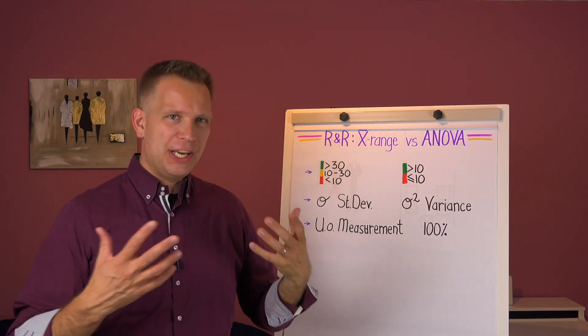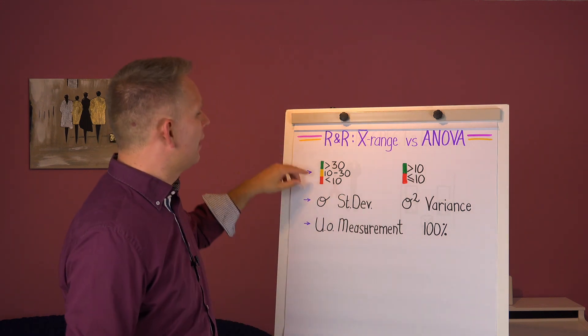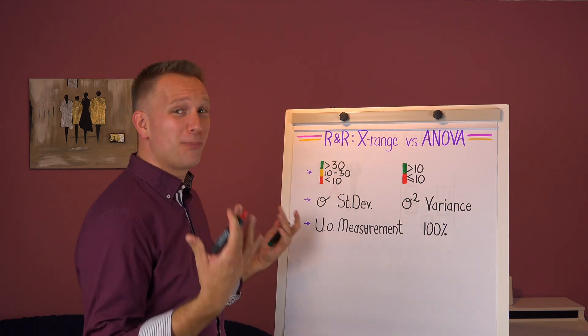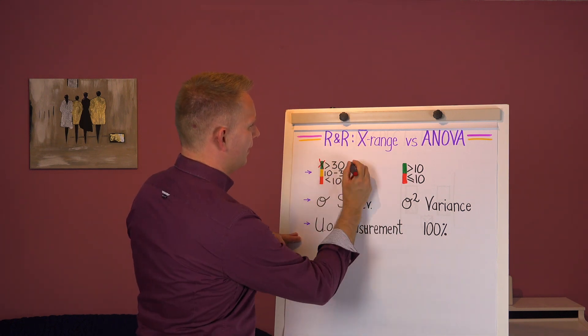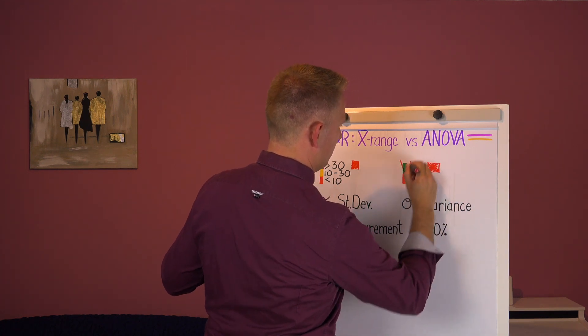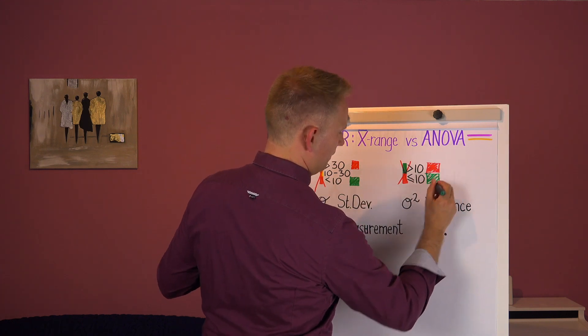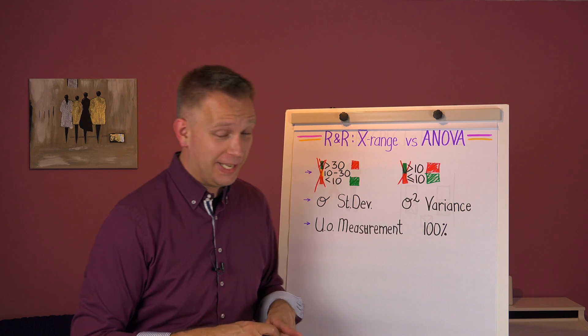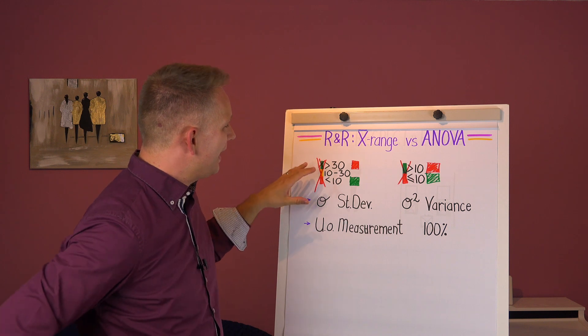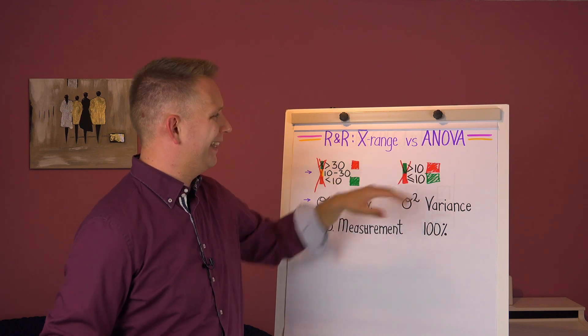So these here indications, right, this higher than, did I do it, I did it the wrong way around. Higher than 30 is wrong. Let me immediately correct this for you. See, I also make mistakes, but not so much in the statistics, but in the interpretation.